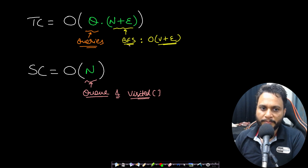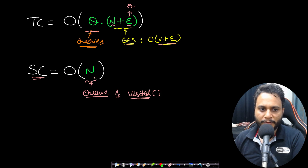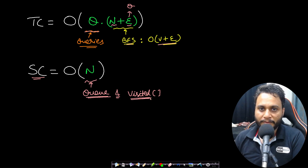We perform BFS for every query. With q queries and BFS taking O(V + E) time where V is n vertices and E is edges, the total time complexity is O((n + E) × q). Since each query adds one non-redundant edge, E can be replaced by q, giving O((n + q) × q). Space complexity is O(n) for the queue and visited array.